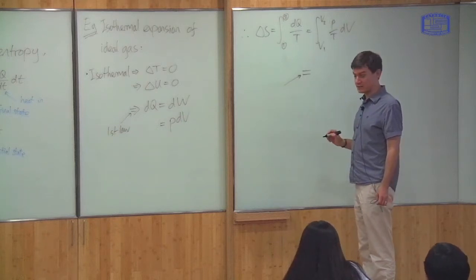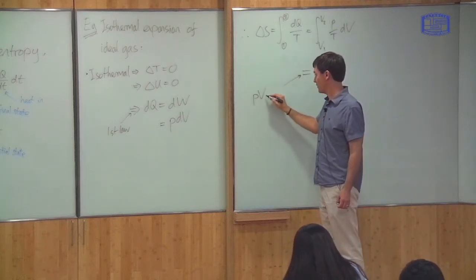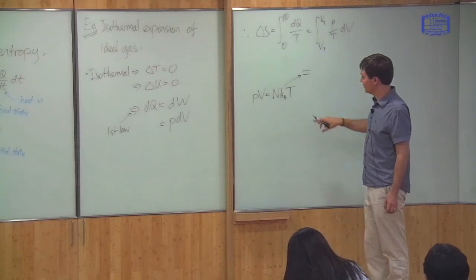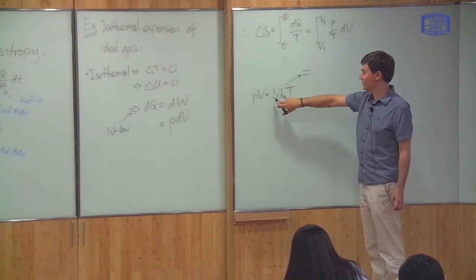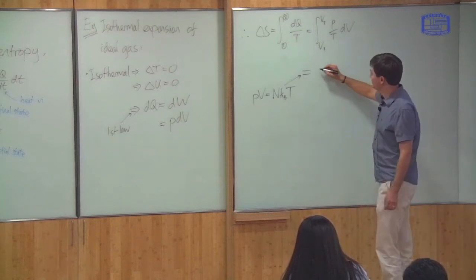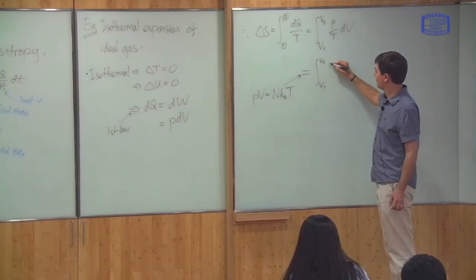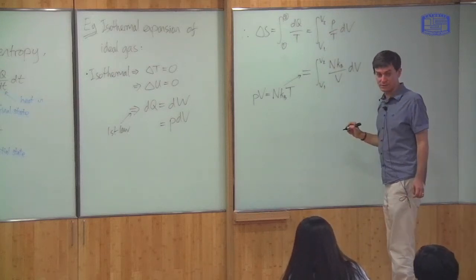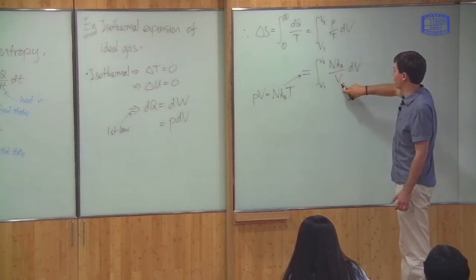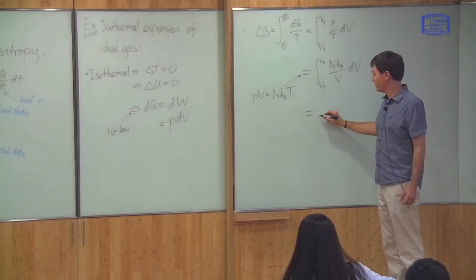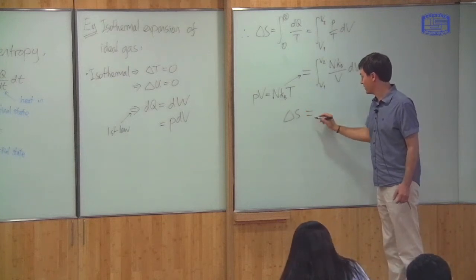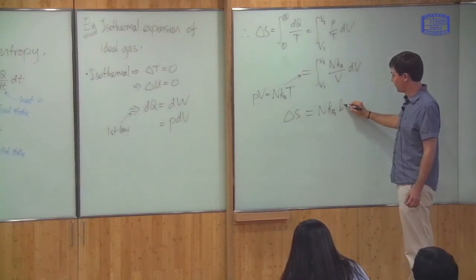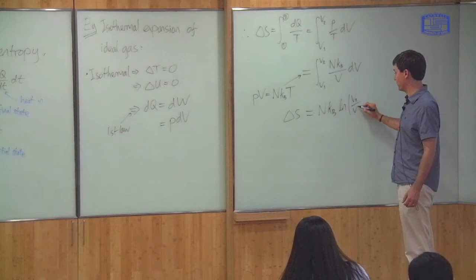That's the definition. Then I can use this result for dQ to say that this is the integral from V1 to V2 of P over T dV. Now I can use the fact that it's an ideal gas, so pressure times volume equals the number of particles times Boltzmann constant times temperature, so P over T equals Nk over V. Integrating Nk over V from V1 to V2 gives an integral of one over volume, and this yields the result that the change in entropy equals the number of particles times Boltzmann constant times the log of the ratio of volumes.